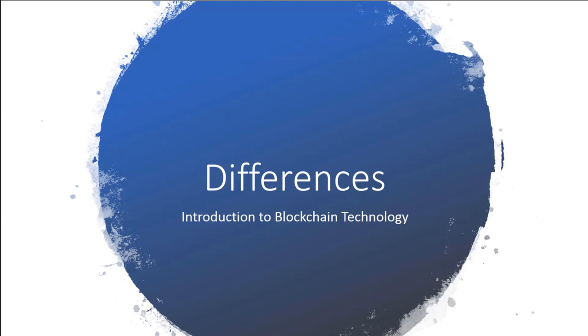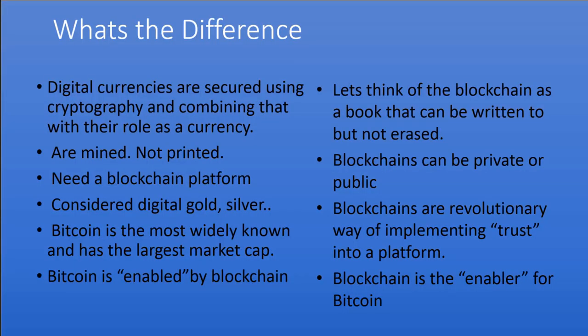Let's discuss the differences between blockchain and cryptocurrencies. There's a lot of confusion out there, as they're often referred to as the same thing, but in reality they're really two different things — one is the enabler and one is being enabled. Digital currencies are secured through cryptography and serve as a currency. They're mined, not printed, and they need a blockchain platform. Bitcoin is digital gold, Litecoin is digital silver. Bitcoin is definitely the most widely known, and it is being enabled by blockchain technology. Blockchain technology is a peer-to-peer protocol.